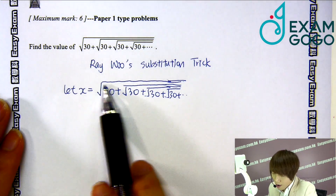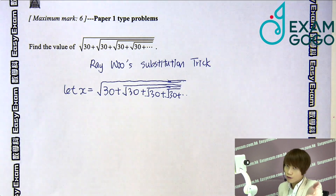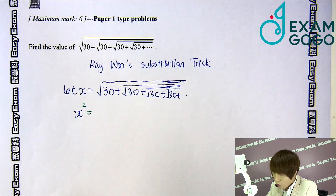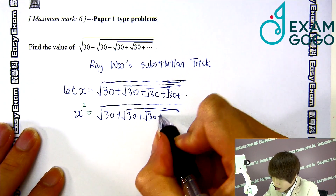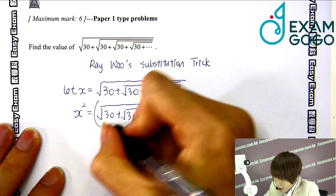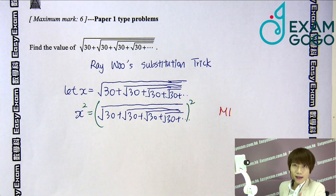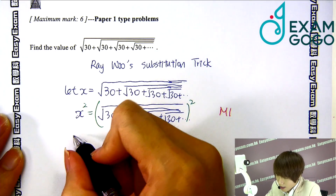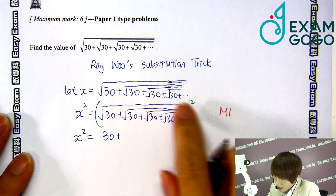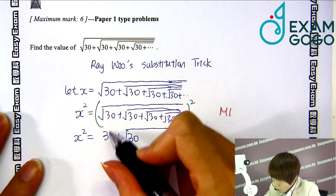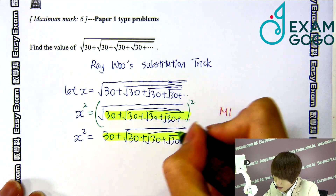Now you can see the square root outside is pretty annoying, right? So to make that square root disappear, I am going to square both sides. We will have x² = 30 + √(30 + √(30 + ...)) and so on. So only the thing inside the square root remains — the outer square root and the squaring cancel each other.